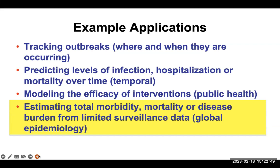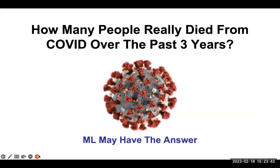The last thing I'm going to talk about is how machine learning can help us estimate the total burden of disease for a big pandemic like COVID. This is important because we often don't know the real impact for several months or years after an outbreak. If people have died, it may affect infrastructure, activities, the economy, or social structure. It may explain why things are broken or what we need to fix. The question we asked was: how many people really died from COVID over the last three years? And we think machine learning may have an answer.